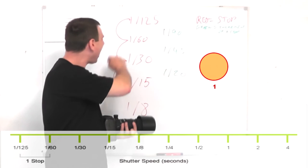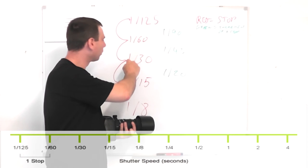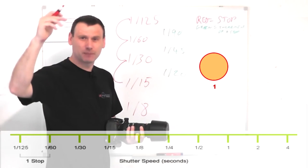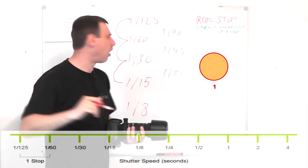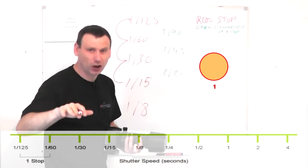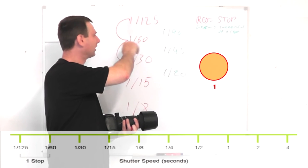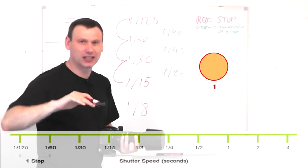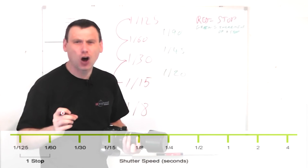And when we go backwards from 1/15th of a second to 1/30th, that is basically stepping down a stop. And 1/30th to 1/60th, again we're stepping down a stop. And 1/60th to 1/125th, we've stepped back down a stop. So they're your stops.